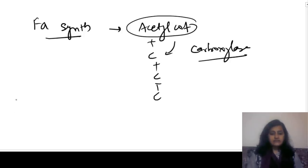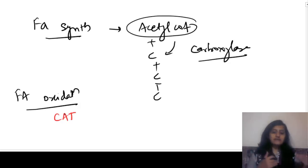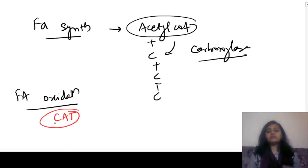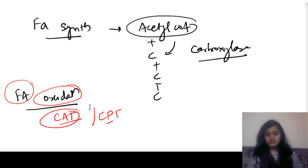For fatty acid oxidation, remember CAT. Imagine a CAT has entered your house and to get it out you run around the CAT — in that process you burn a lot of fat. So CAT helps you remember fatty acid burning, i.e., fatty acid oxidation. For fatty acid oxidation it is CAT — carnitine acyl transferase, also called carnitine palmitoyl transferase (CPT).